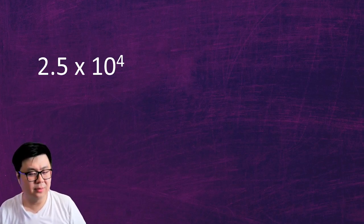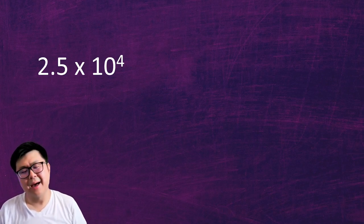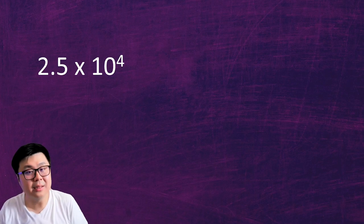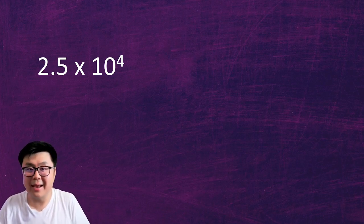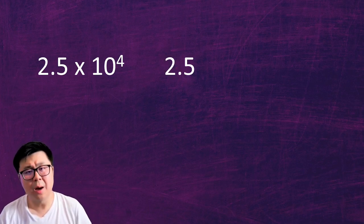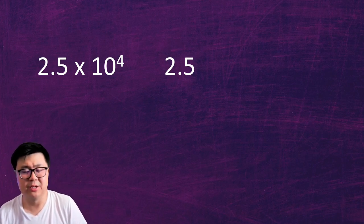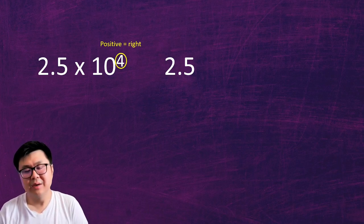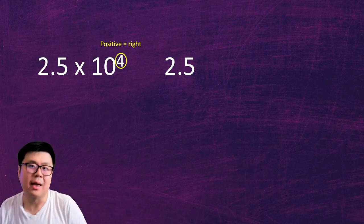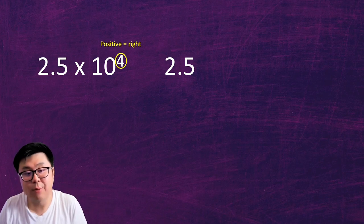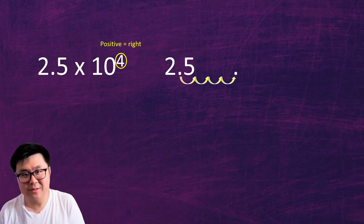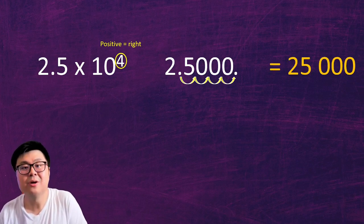Let's take a number in scientific notation and write it as the actual number. I think it's better to know how to do it manually by hand, because then it'll help you go backwards from an actual number to scientific notation. First, we copy down the number in front. Then we look at the exponent — the exponent is the instructions on how to move the decimal. If the exponent is positive, we move the decimal to the right. How many times? However many times the exponent is. In this case our exponent is 4, so we move the decimal four times to the right. The empty slots get filled in with zeros, giving us 25,000.